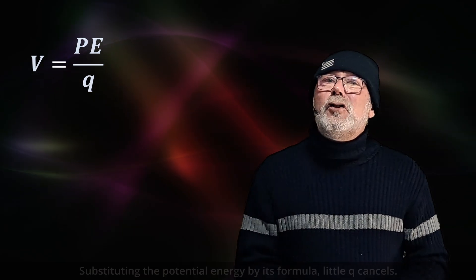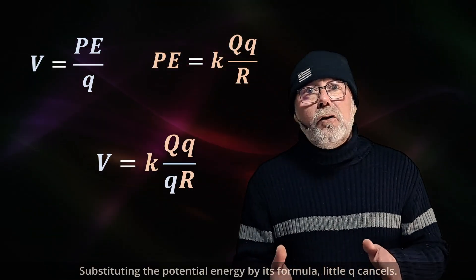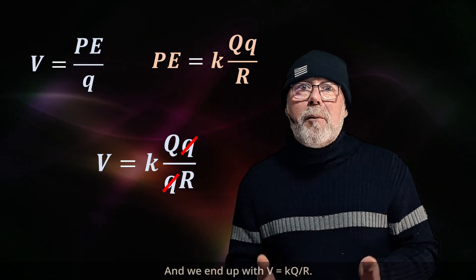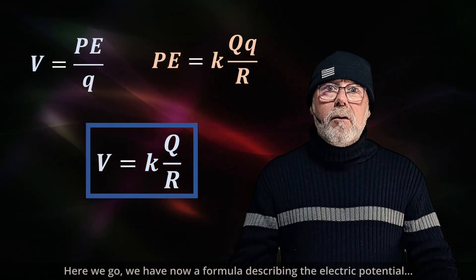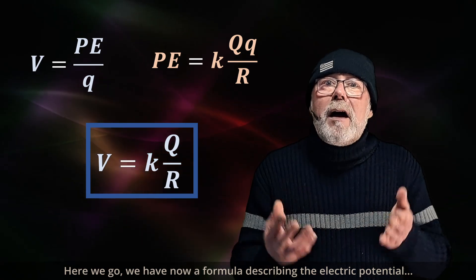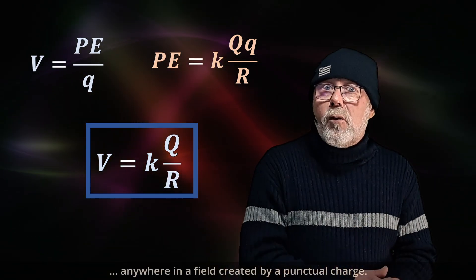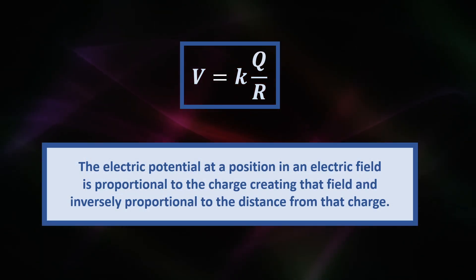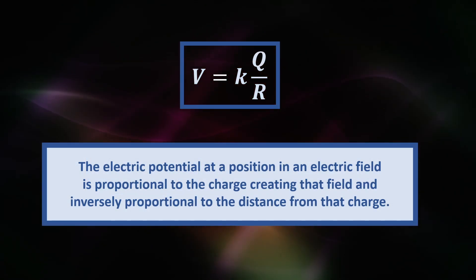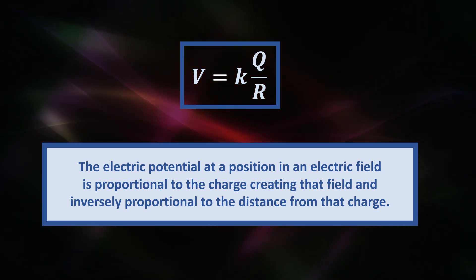V equals PE over little q. Substituting the potential energy by its formula, the little q's cancel, and we end up with V equals K·Q over R. We now have a formula describing the electric potential anywhere in a field created by a point charge. The electric potential at a position within such a field is proportional to the charge creating the field and inversely proportional to the distance from that charge.